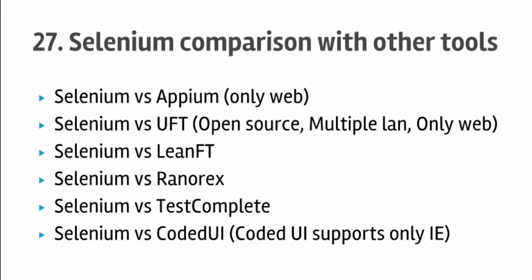Let us start with Appium. In Appium we can automate native Android and iOS applications, but in Selenium we can only automate web applications. That is the main difference. Otherwise, Appium is also open source and can be coded in various languages: C#, .NET, Python, Ruby, PHP, etc.